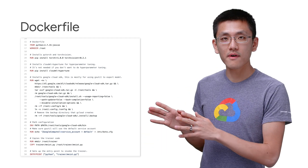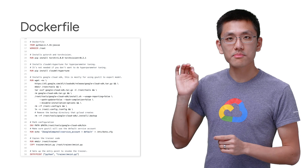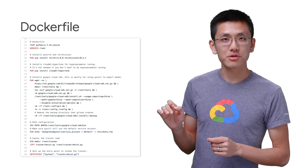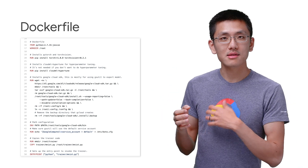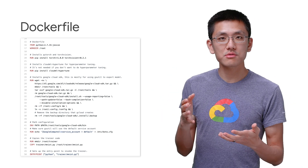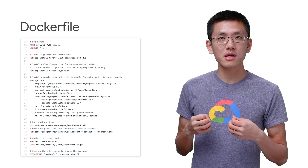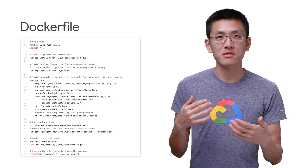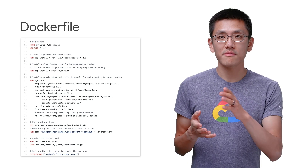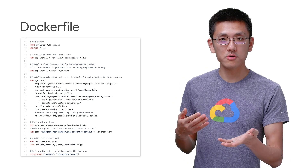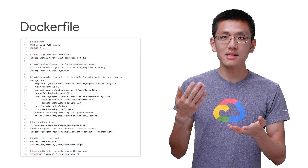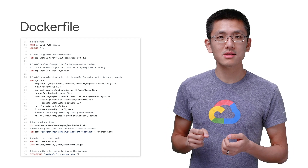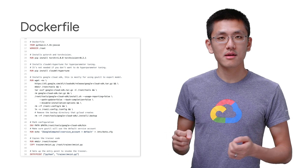Our Dockerfile installs PyTorch, CloudML Hypertune, and downloads gsutil for exporting to cloud storage. Then it configures some paths. Finally, it copies in the training code and sets it up to run right when the container starts executing.